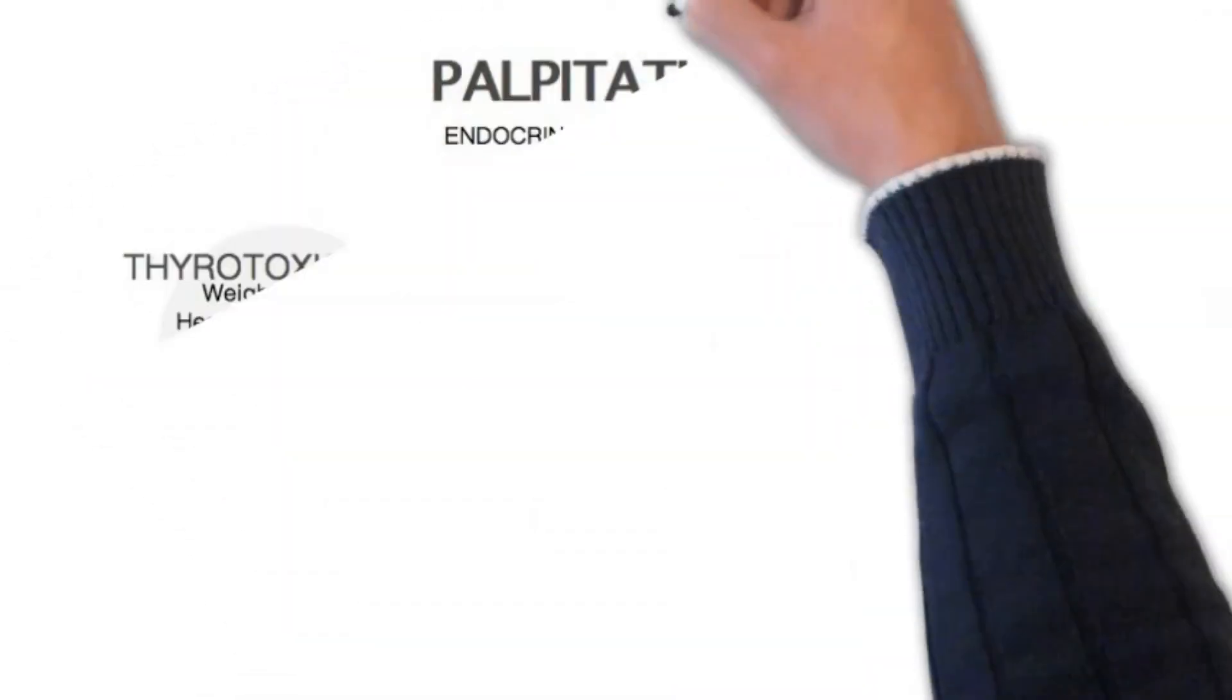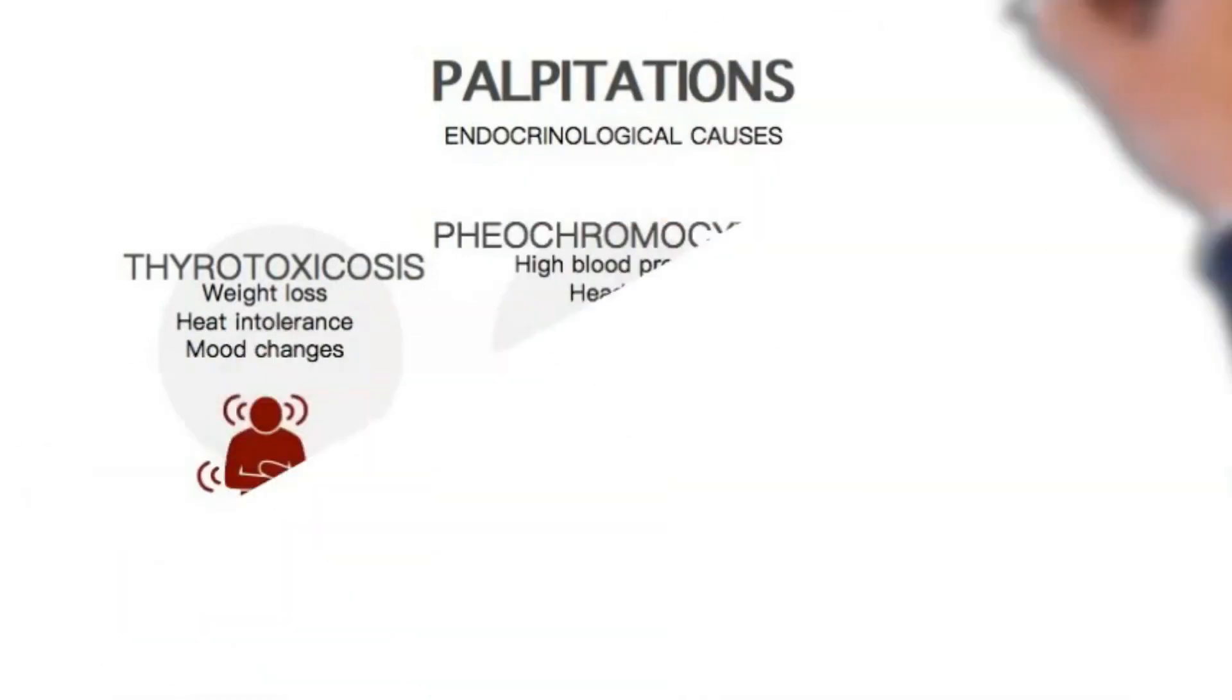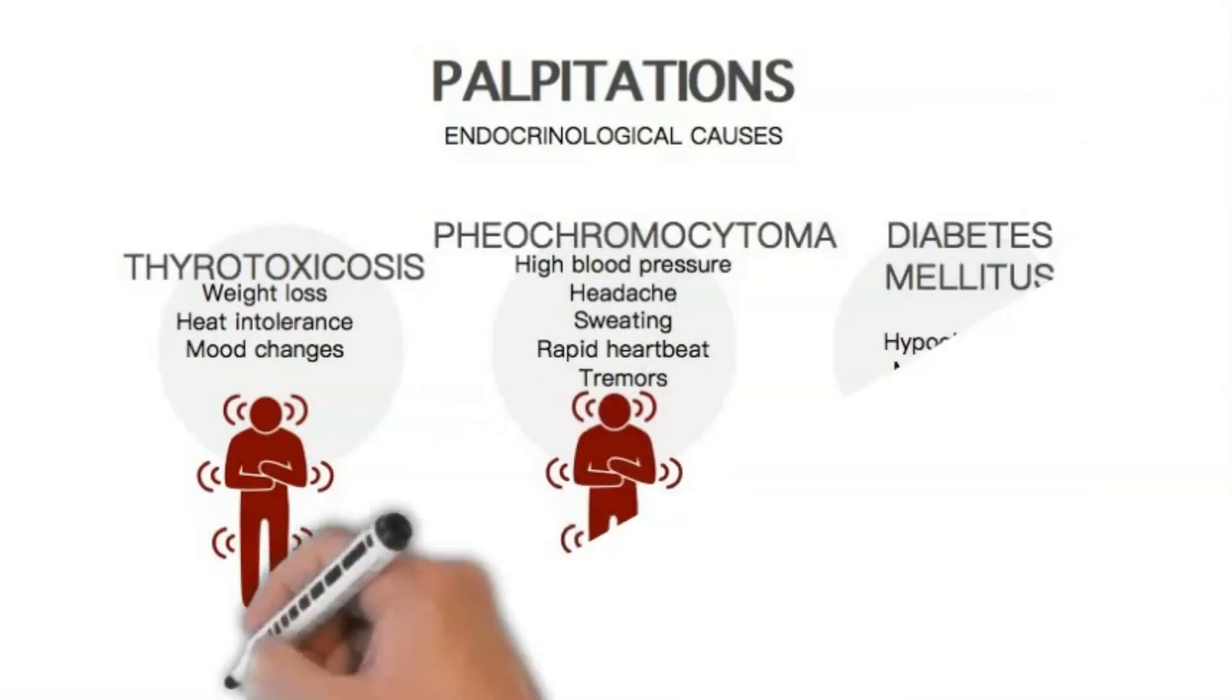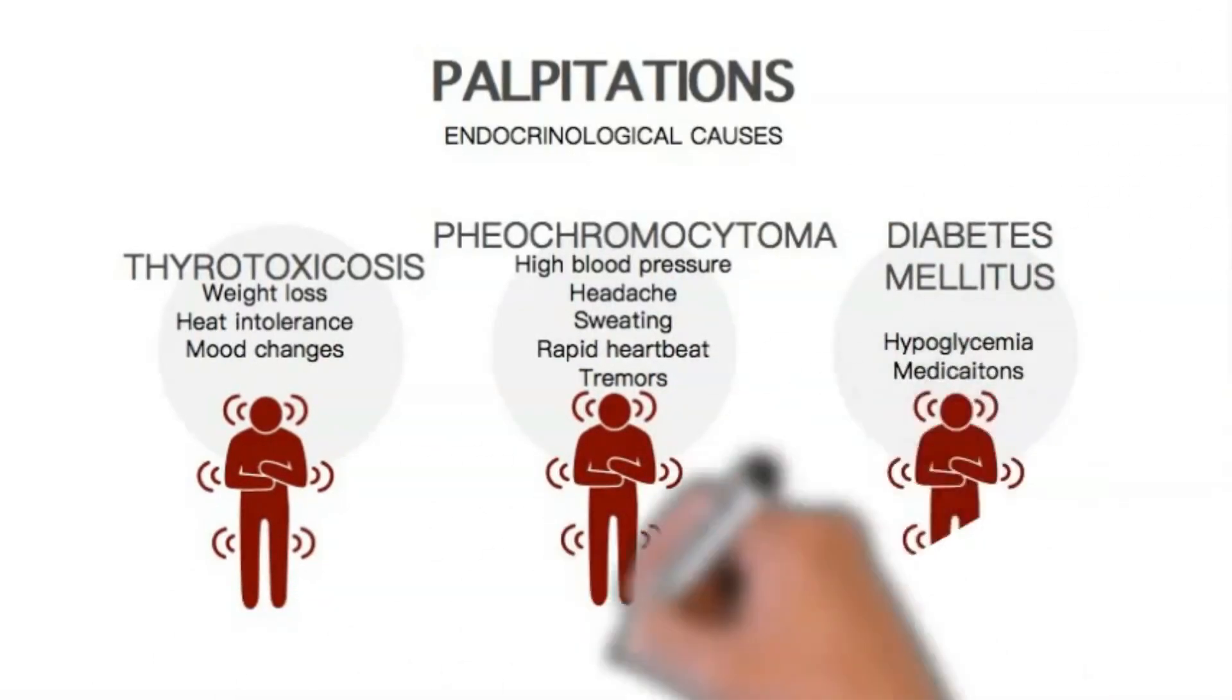Next we are discussing endocrinological causes that may cause palpitations. First, ask about the symptoms of thyrotoxicosis, such as weight loss, heat intolerance, and mood changes. Next, ask about features of pheochromocytoma like high blood pressure, headache, sweating, rapid heartbeat, and tremors.